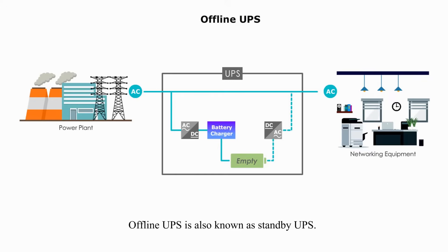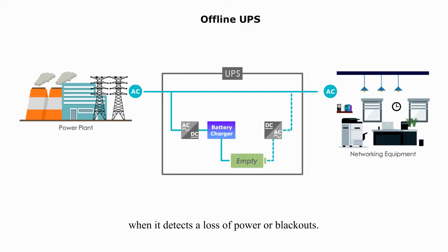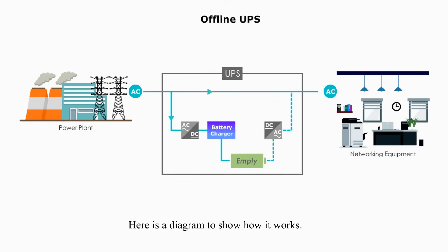Offline UPS is also known as standby UPS. It provides continuous electricity by switching to the battery whenever it detects a loss of power or blackouts. Here is a diagram to show how it works.